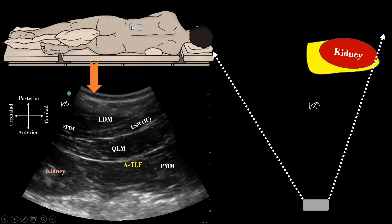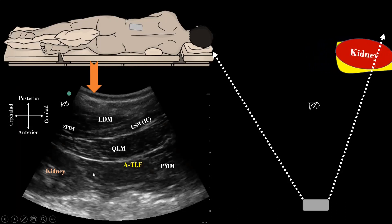The probe is placed in the desired location as described before. The cranial end of the transducer is tilted medially and the caudal end is rotated laterally to produce an oblique sagittal view. In this view, first identify the kidney with perinephric fat on the cranial end of the ultrasound image, which moves with respiration.